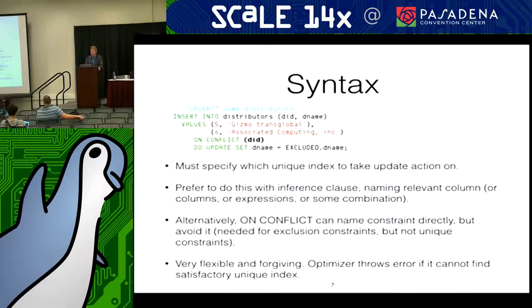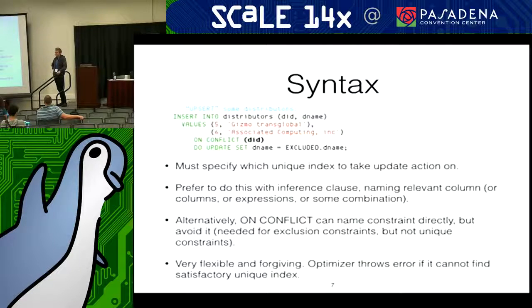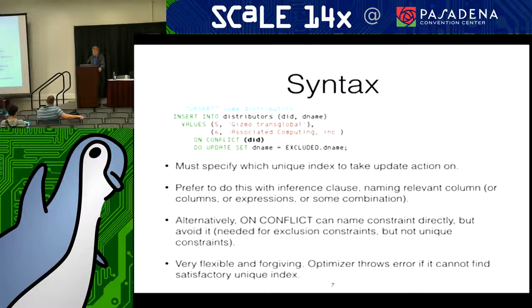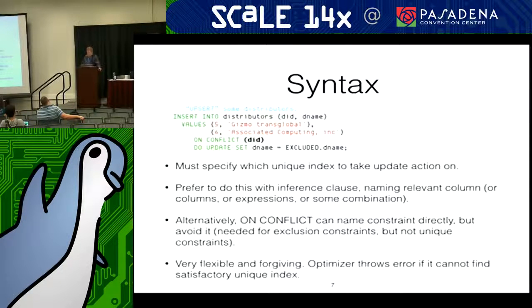This is much better than naming an index or a constraint directly — it's more robust. Columns can be in any order; this could be a composite index, and you could be inconsistent in the ordering and that would just work fine. These unique indexes that you infer will appear in explain output if you attempt to explain the insert or update statement — you'll see precisely what was inferred and other details. Insert on conflict do nothing also supports exclusion constraints. Exclusion constraints are sometimes called a generalization of unique constraints, meaning they generalize to other operators — for example, the overlaps operator. This could be useful in a domain like event management, enforcing that no one can use a room at the same time.